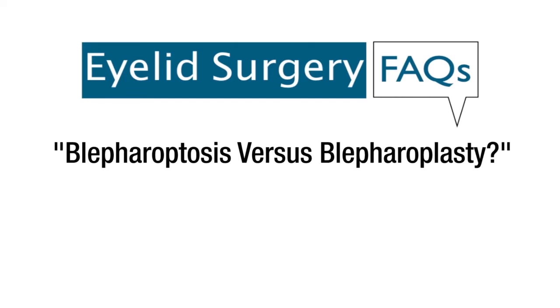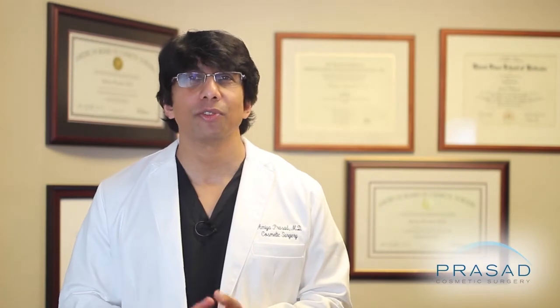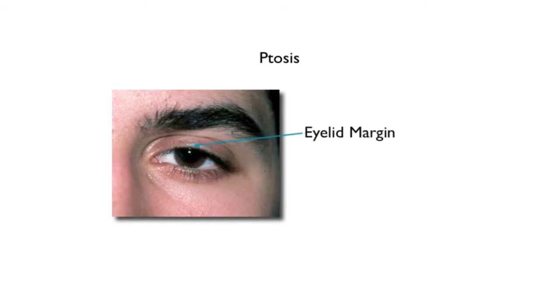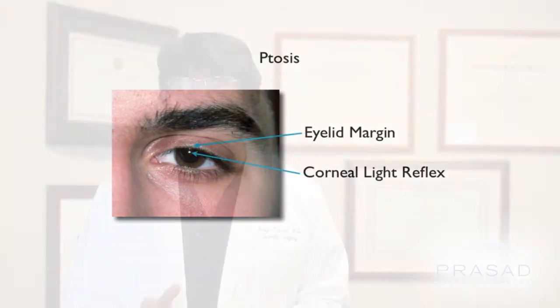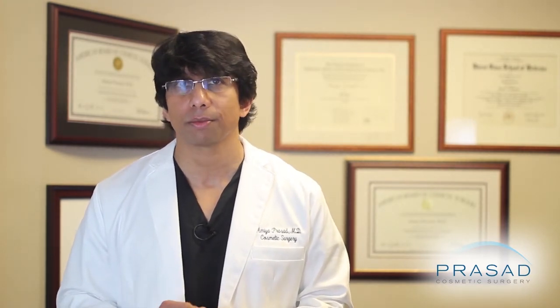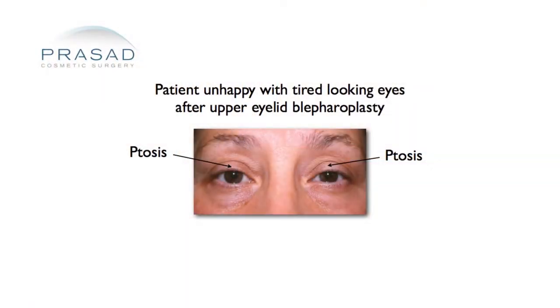Distinguishing if you need blepharoptosis repair or blepharoplasty is based on the position of the eyelid relative to the pupil. It is common for ptosis to be missed because the plastic surgeon assumes that the eyelid appearance will be improved with blepharoplasty alone. This results in eyelids being droopy and the person looking tired in spite of eyelid surgery.